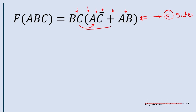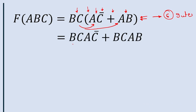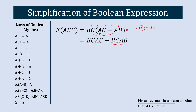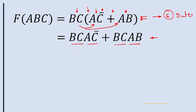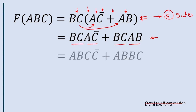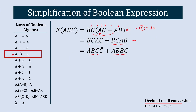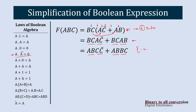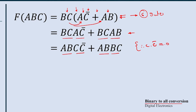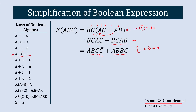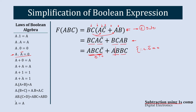In step one, we multiply these two outer terms with the inner two terms, giving us: BC · AC̄ + BC · AB. To make further simplification easier, let's rearrange these terms — rearrangement is allowed by the laws of Boolean algebra — giving us: ABC·C̄ + AB·BC. Here, C · C̄ equals zero, so this entire term becomes zero, since anything multiplied by zero is zero.